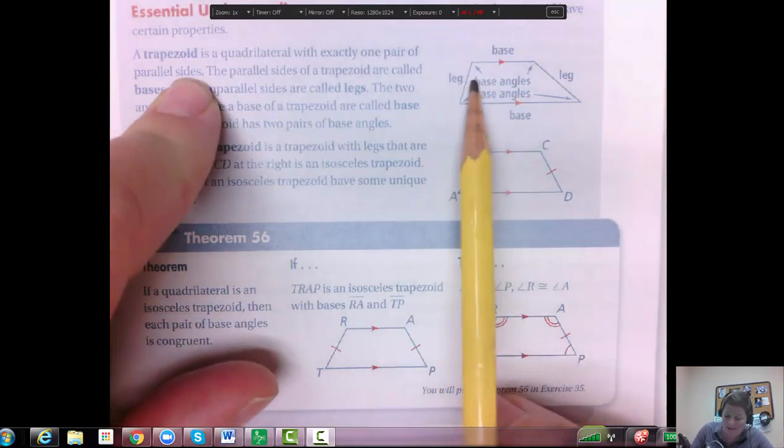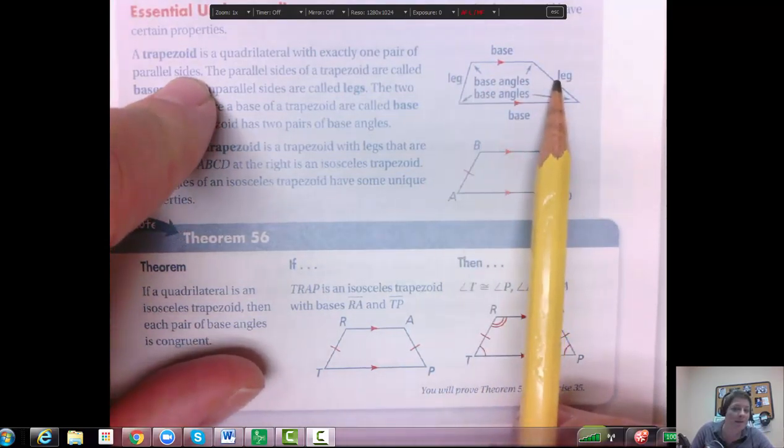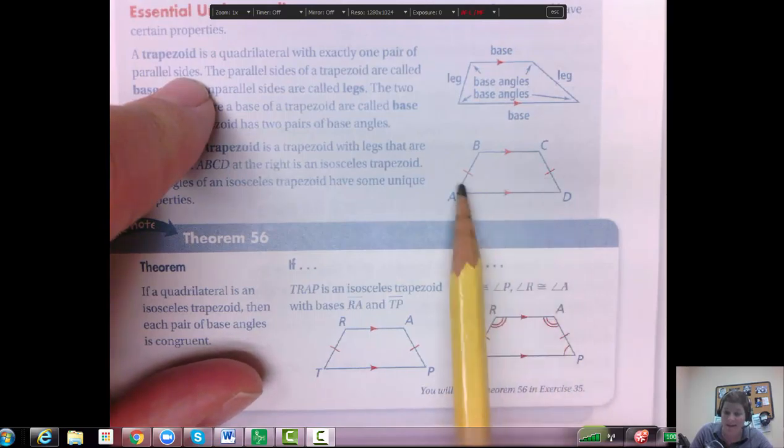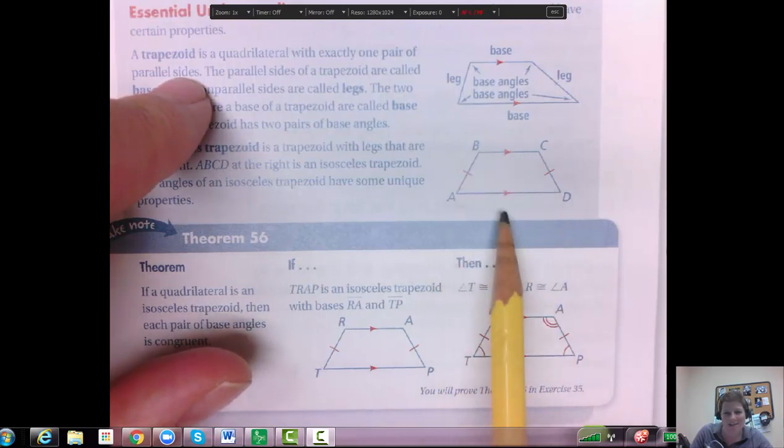So exactly one pair parallel. The other sides could be totally different lengths, or they could be congruent and it's still a trapezoid. If they're congruent, we like to call this one an isosceles trapezoid. It's the more common one we see.